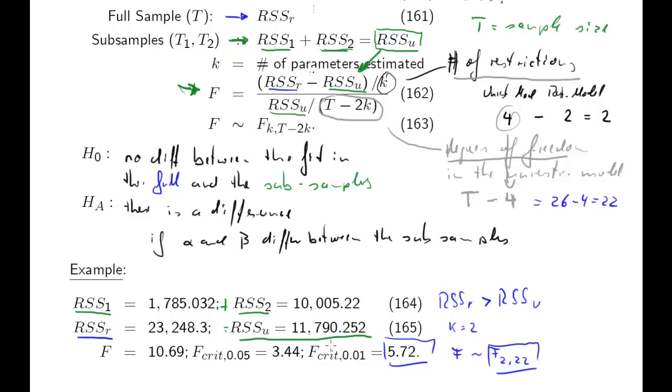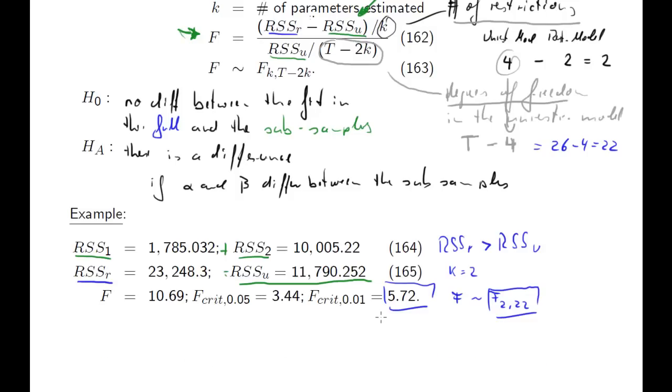So if you plug all these values into your F formula here, what you get is this value: 10.69. Our decision rule, important for the F test: it's a right-sided test, reject H_0 if F is larger than the critical value. So here we have 10.69, even at a 1% level. So let's say we set alpha to 1% and that means that we reject H_0, as our test statistic 10.69 is indeed larger than the critical value. So this is how our Chow test works.